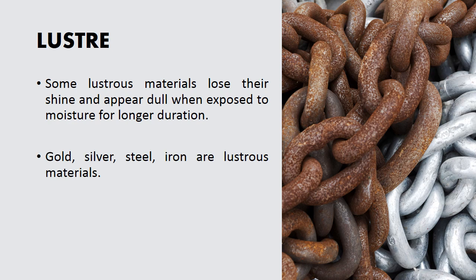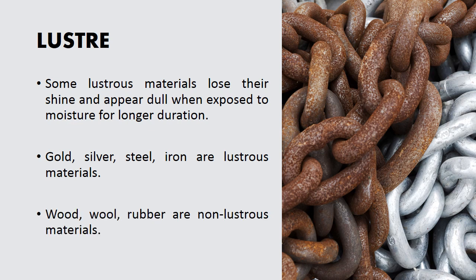Gold, silver, steel, and iron are some examples of lustrous materials, while wood, wool, and rubber are some examples of non-lustrous materials.